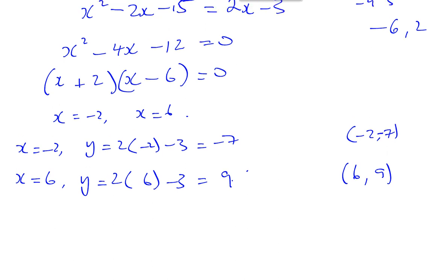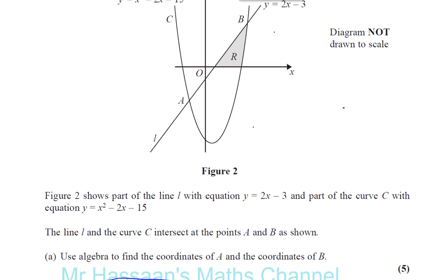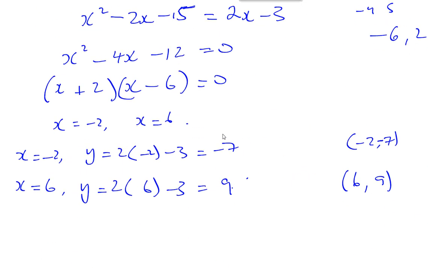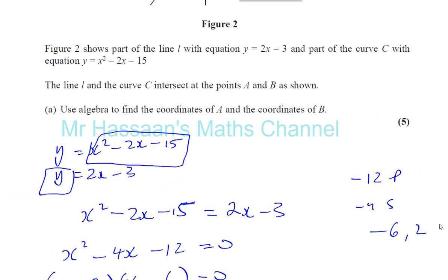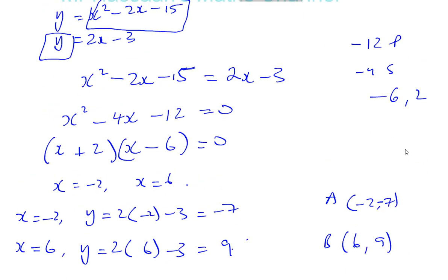We can label them according to the graph given. A must be the one that we found first and B is the one we found second. So, there we have part A completed for this question. I'm going to go on to part B in the next part of this video. Keep your eyes peeled. Thank you for watching.